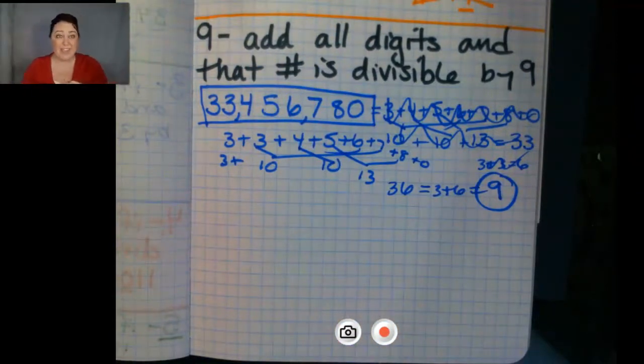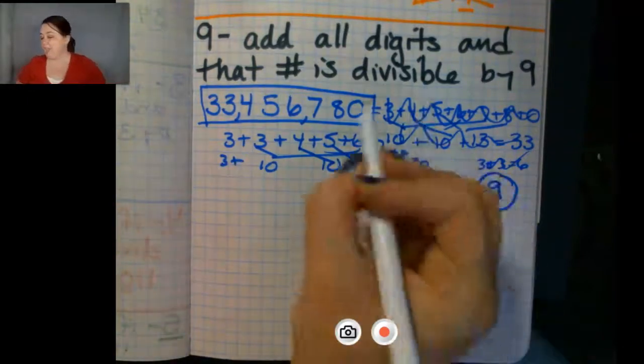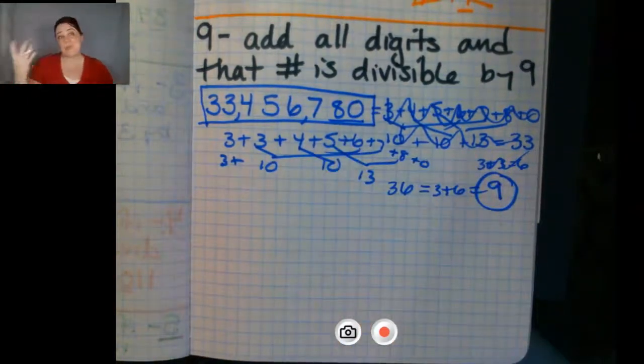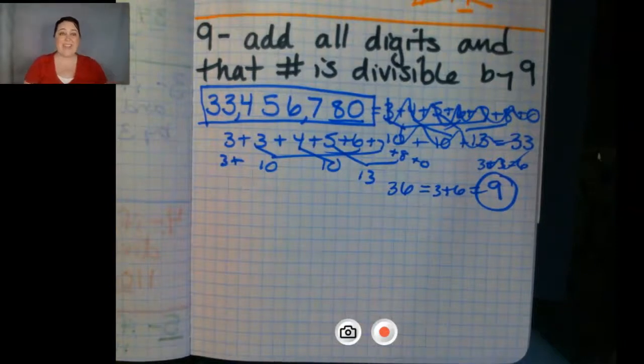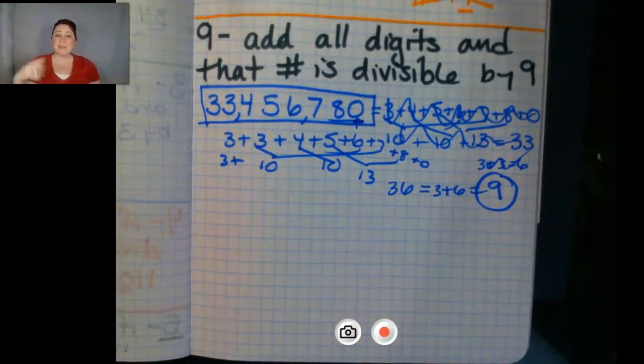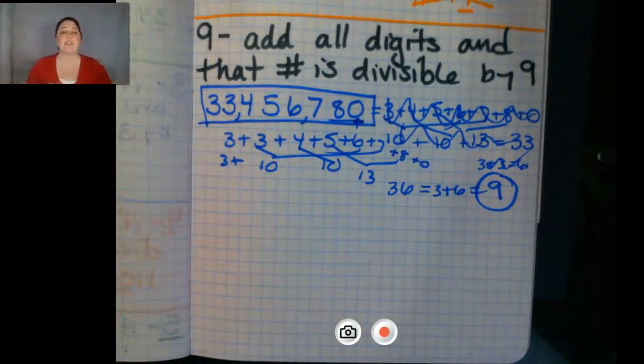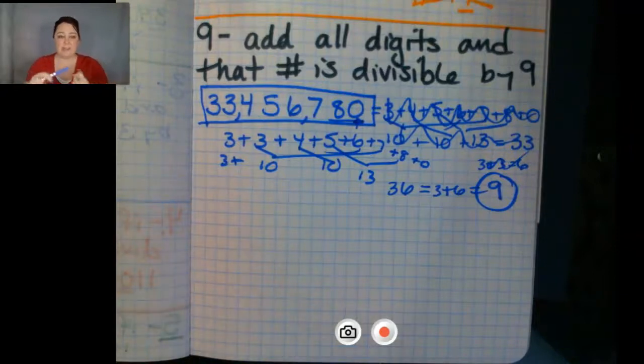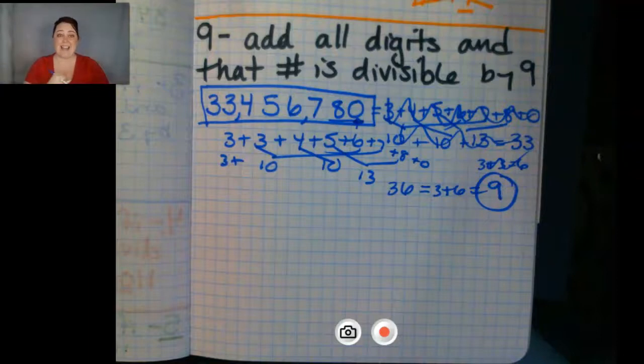It's also divisible by three and it ends in an even number. So that is divisible by six. The last two digits are 80. So it's divisible by four. The last digit is a zero. So it's divisible by five. So far this number 33,456,780 is divisible by everything. You can divide by two, three, four, five, six, and nine.